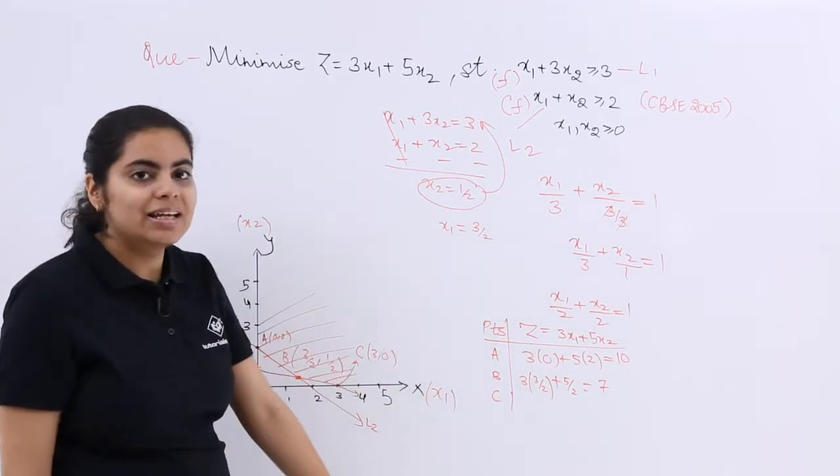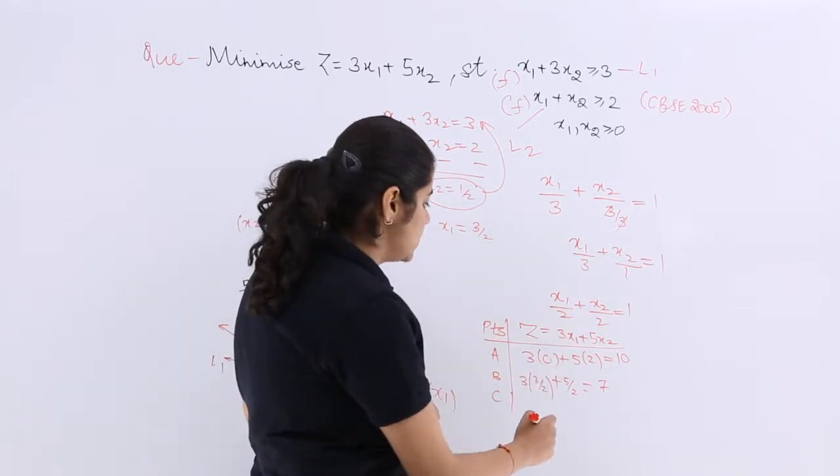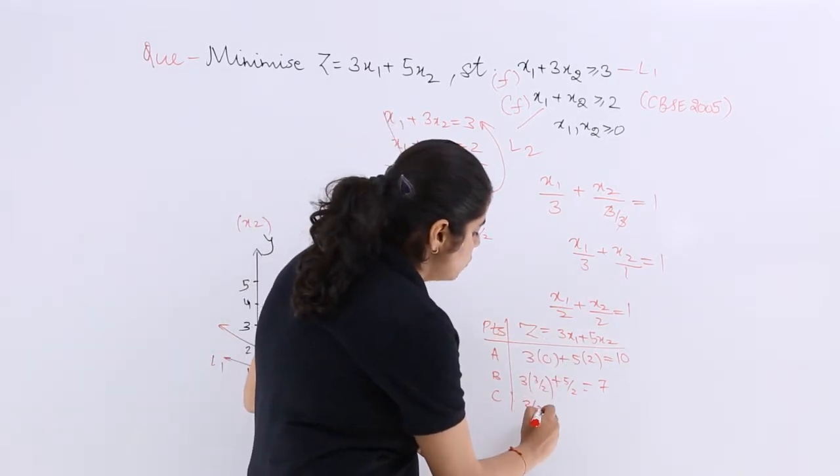And what is the last thing? It is C. What is C? 3, 0. So put it here. You get 3, 0. And here you get 3 into 3 which is 9.